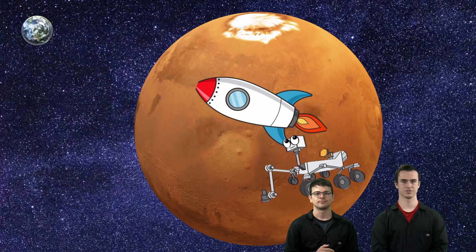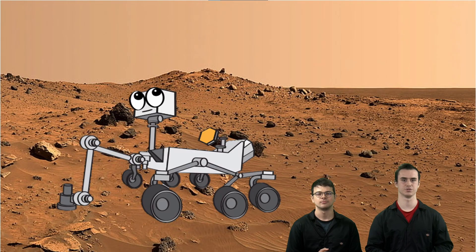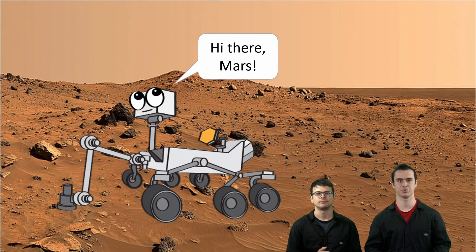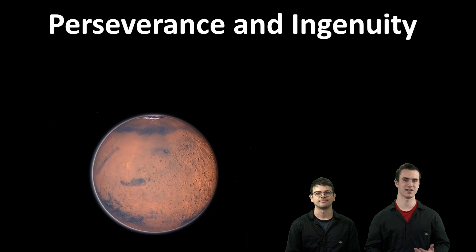Percy landed on Mars' surface in a flat spot called the Jezero Crater. It then uses its tools to drill holes in rocks to collect samples for future analysis. Additionally, Percy has a little helicopter buddy named Ingenuity that can fly around Mars' surface and take pictures to send back to Earth.